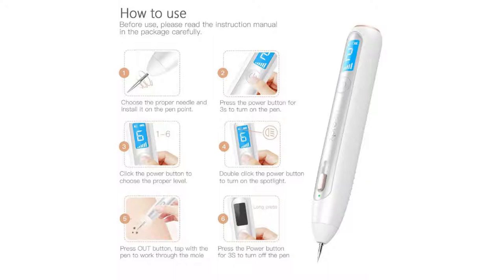Press the out button. Tap with the pen to walk through the mode. 6. Press the power button for 3 seconds to turn off the pen. Okay.